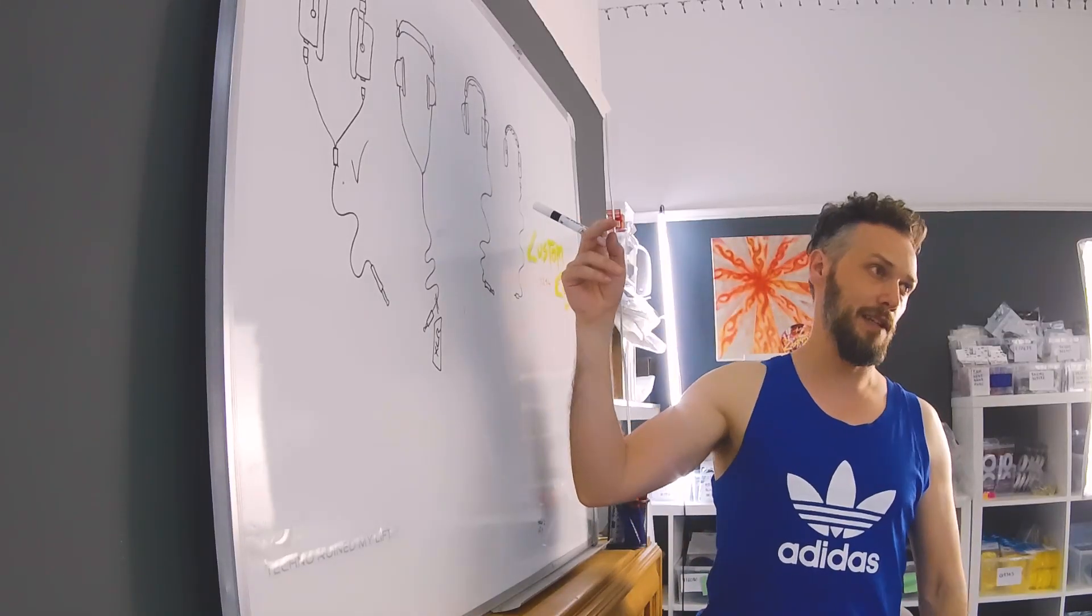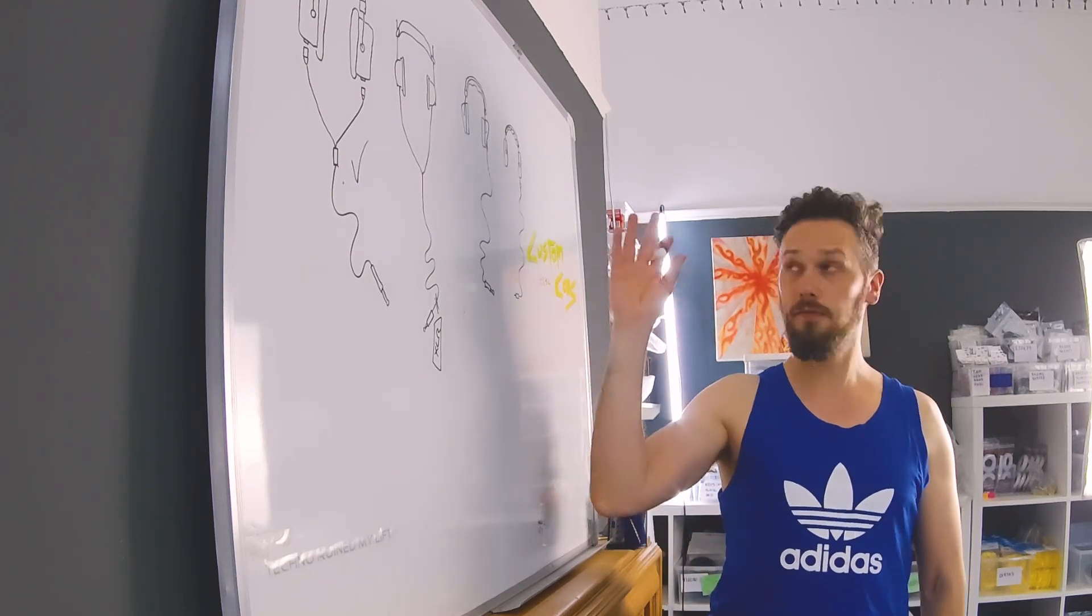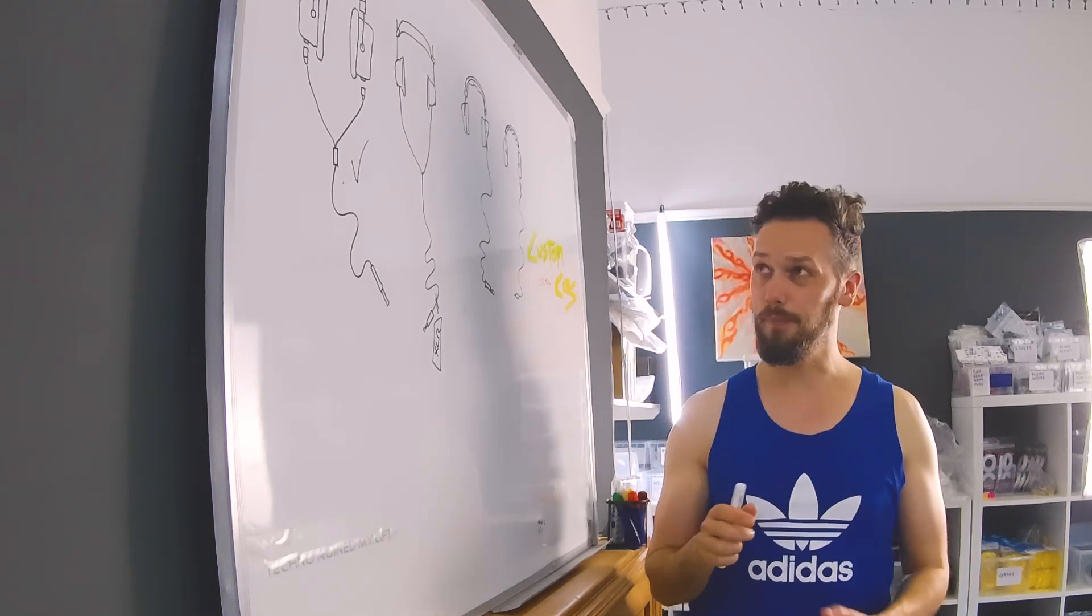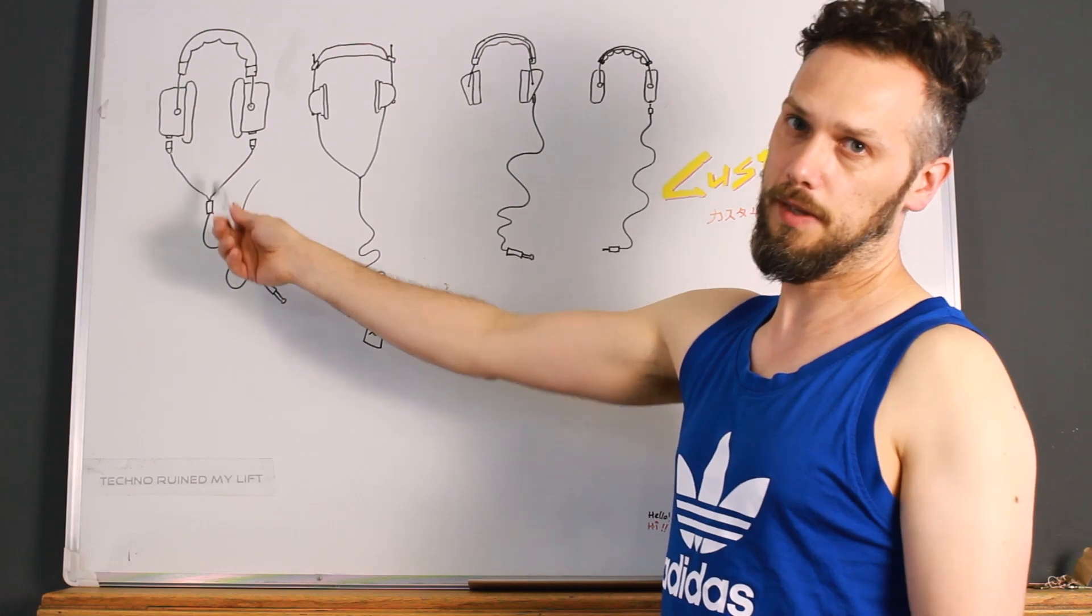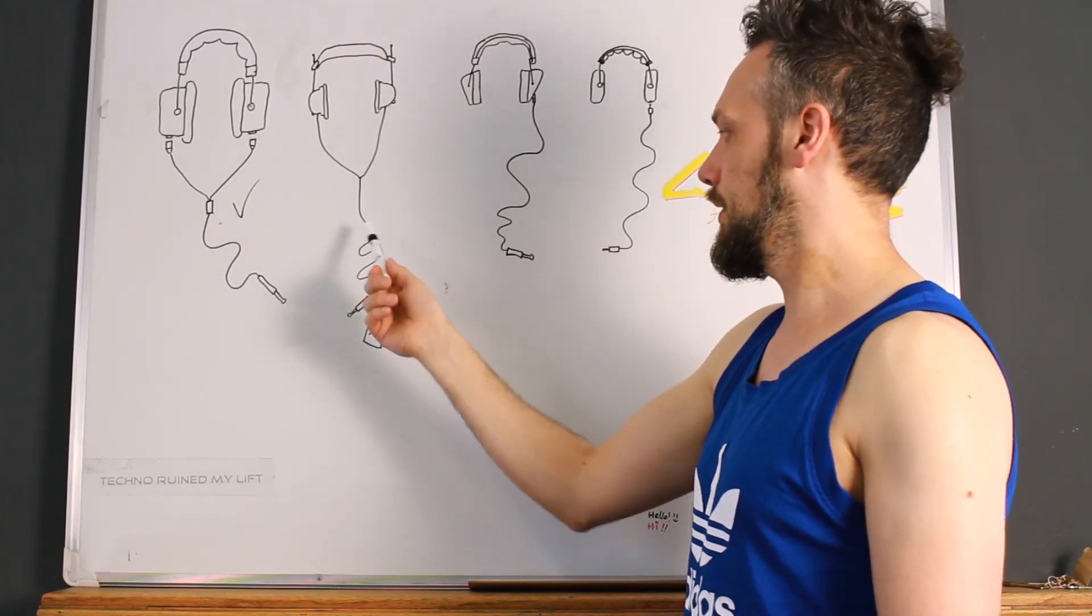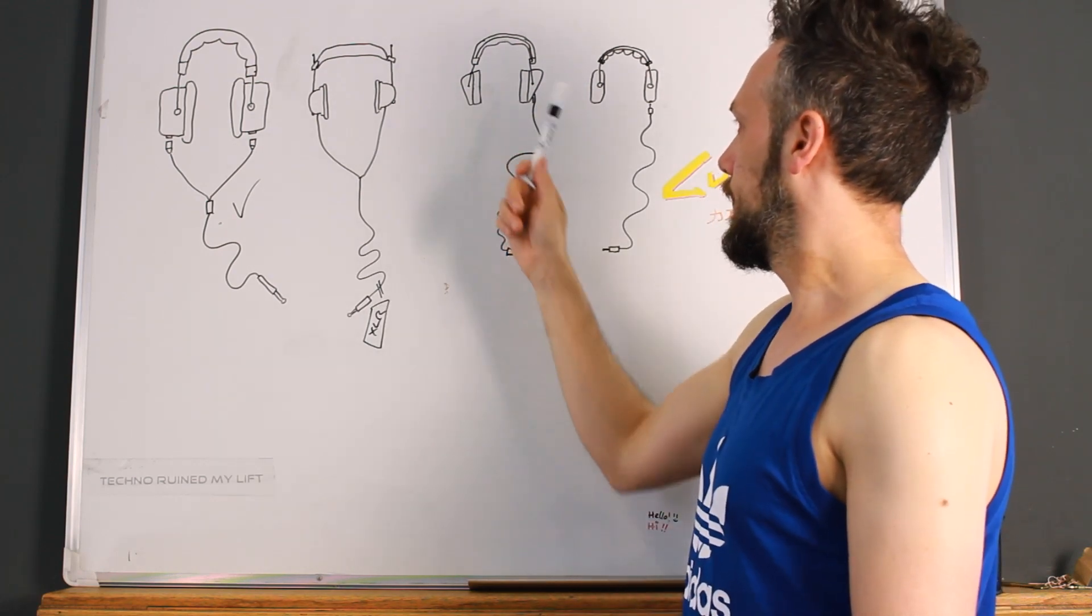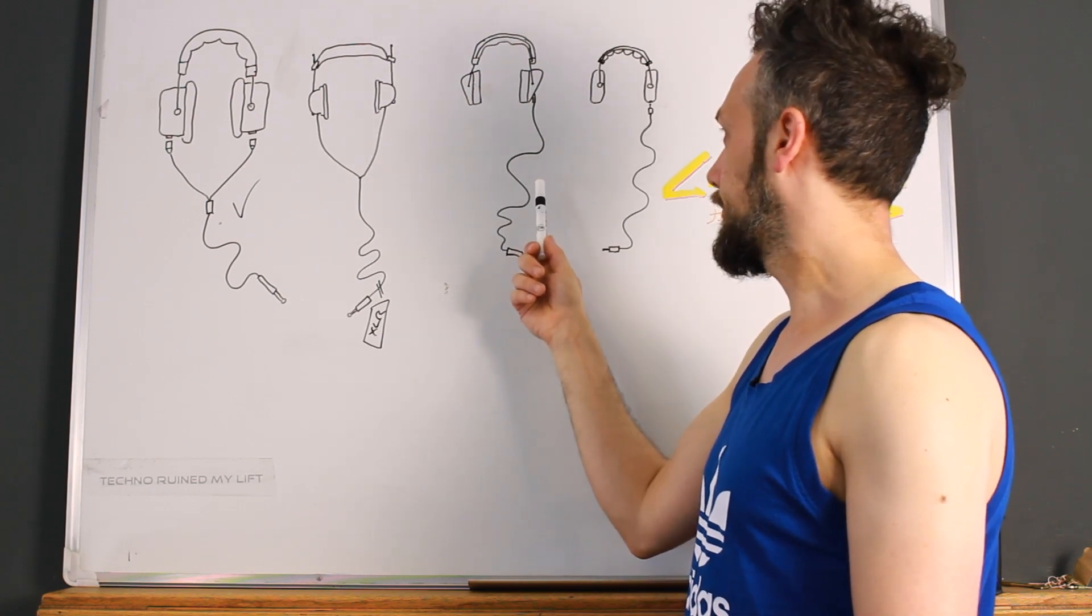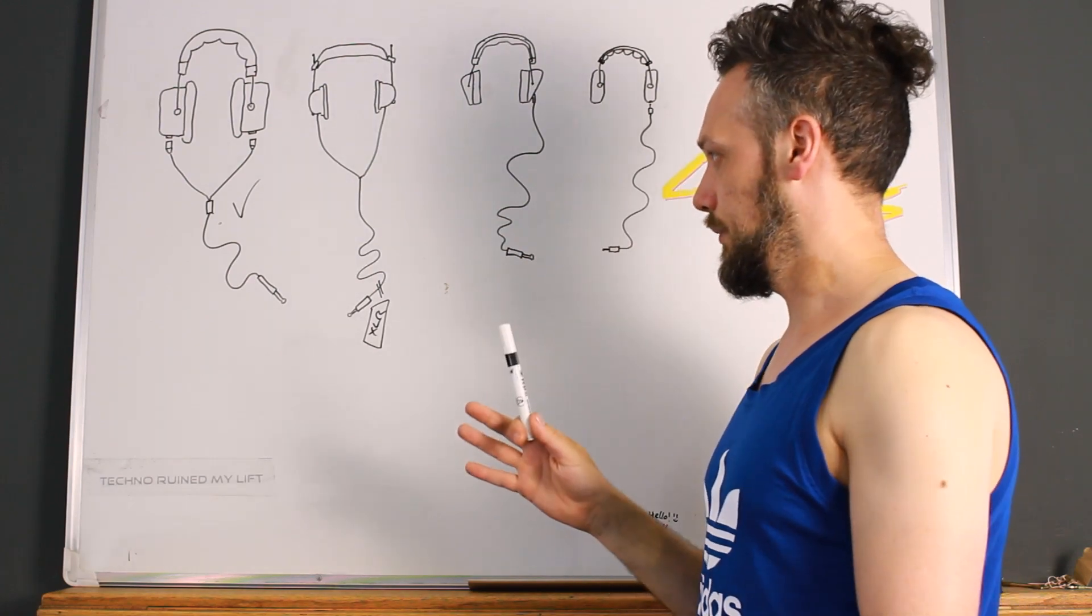There are some exceptions like the Sennheiser 598 and some of the Oppos which have got a full pin connection in the socket, but those are few and far between. So in general, dual-sided detachable super easy, just change the cable. Fixed dual-sided, solder on a new jack, pretty cheap. Fixed single cable, you have to replace the cable. And then one with a detachable single-sided cable, not really worth bothering with.